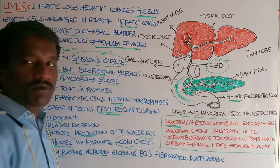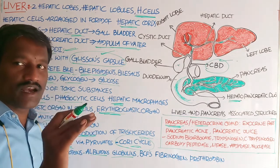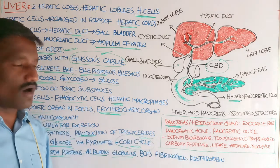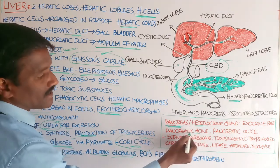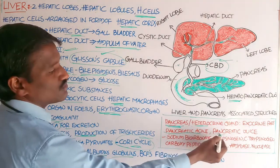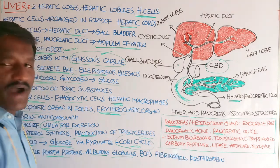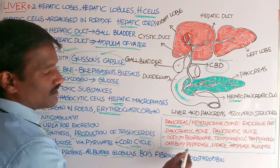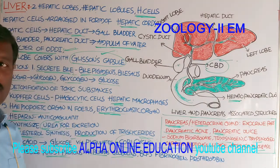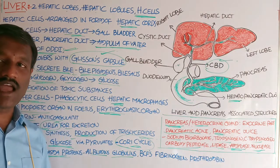The pancreas consists of two parts: an exocrine part and an endocrine part. The endocrine part secretes two hormones: insulin and glucagon. The exocrine part consists of pancreatic acini, which secrete pancreatic juice. Pancreatic juice helps in digestion and contains sodium bicarbonate, trypsinogen, chymotrypsinogen, carboxypeptidase, pancreatic lipase, pancreatic amylase, and nucleases such as DNAases and RNAases.